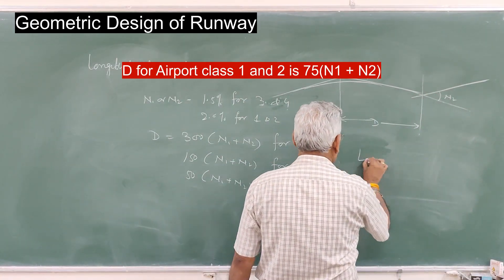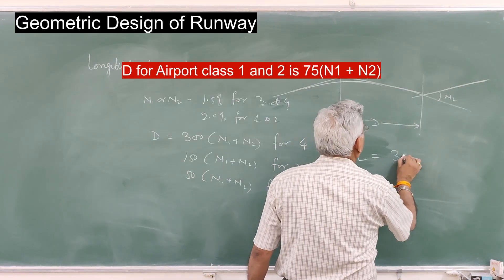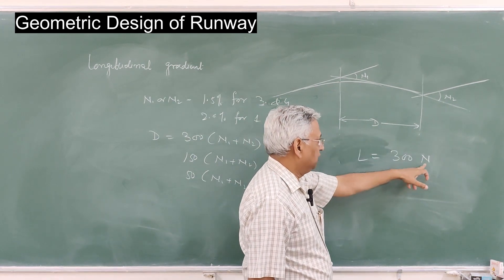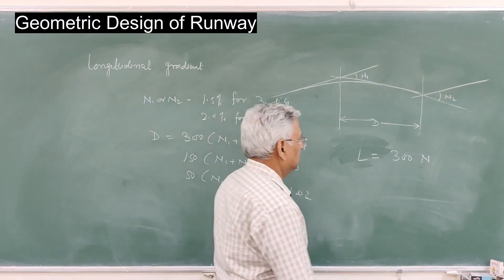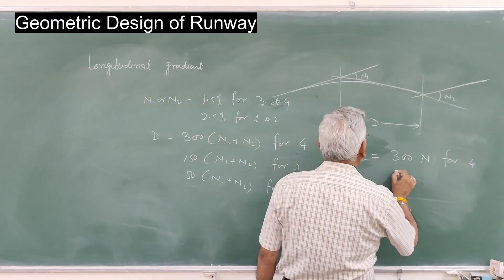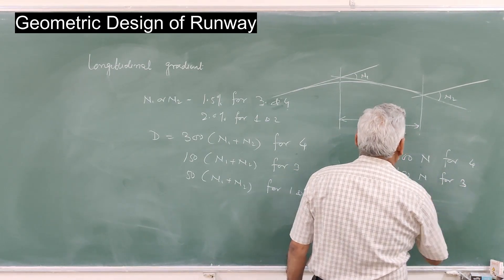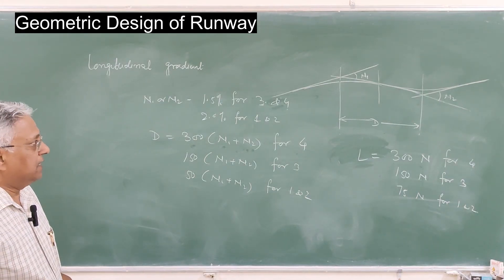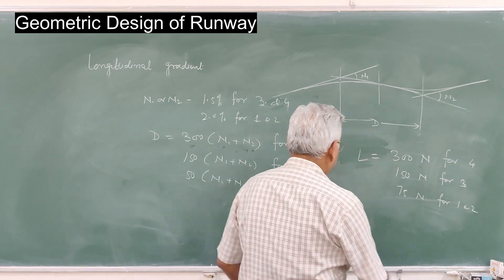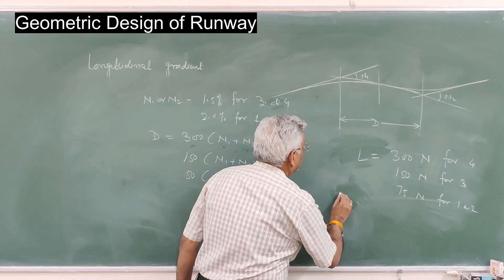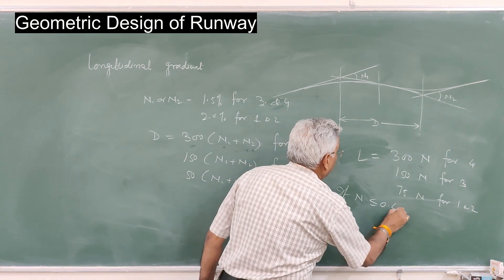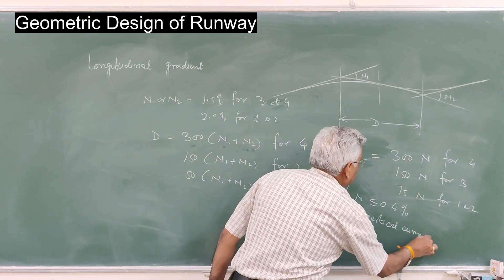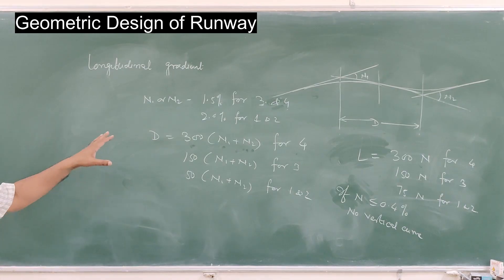The length of the vertical curve L is given by L = 300n for airport class 4, 150n for class 3, and 75n for classes 1 and 2, where n is the grade change (G1 minus G2). No vertical curve is required if the grade change n is less than or equal to 0.4 percent. That is how the longitudinal profile of the runway is designed.